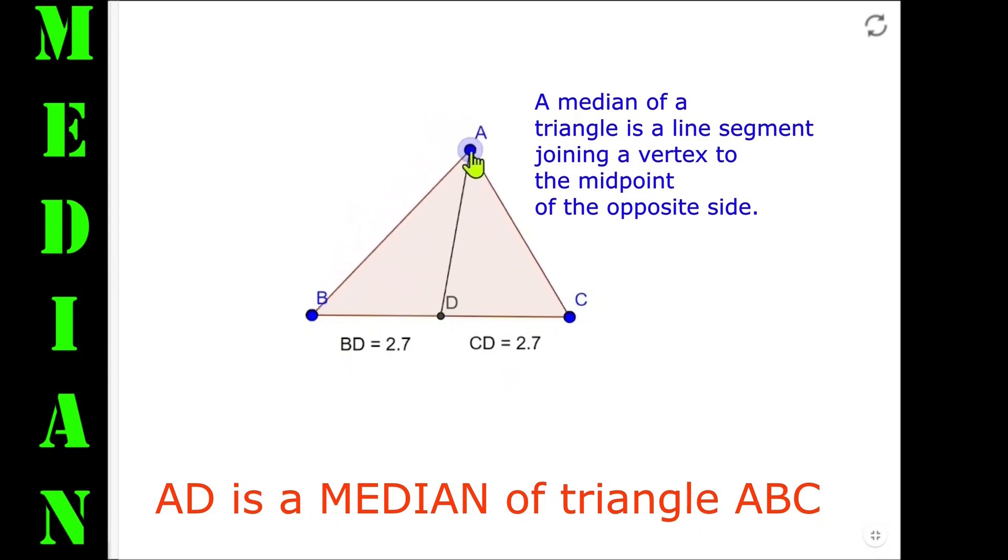As I'm dragging vertex A, you will notice that point D is not moving at all. We can see here the length of BC is fixed, and that is why BD equals DC.